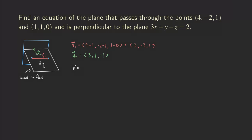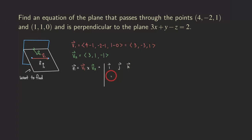Now, the normal vector n is given by V1 cross V2. We set up a three-by-three determinant with i, j, k in the first row. V1 = (3, −3, 1) goes in the second row, and V2 = (3, 1, −1) goes in the third row. Remember, the cross product is not commutative, so the order matters.